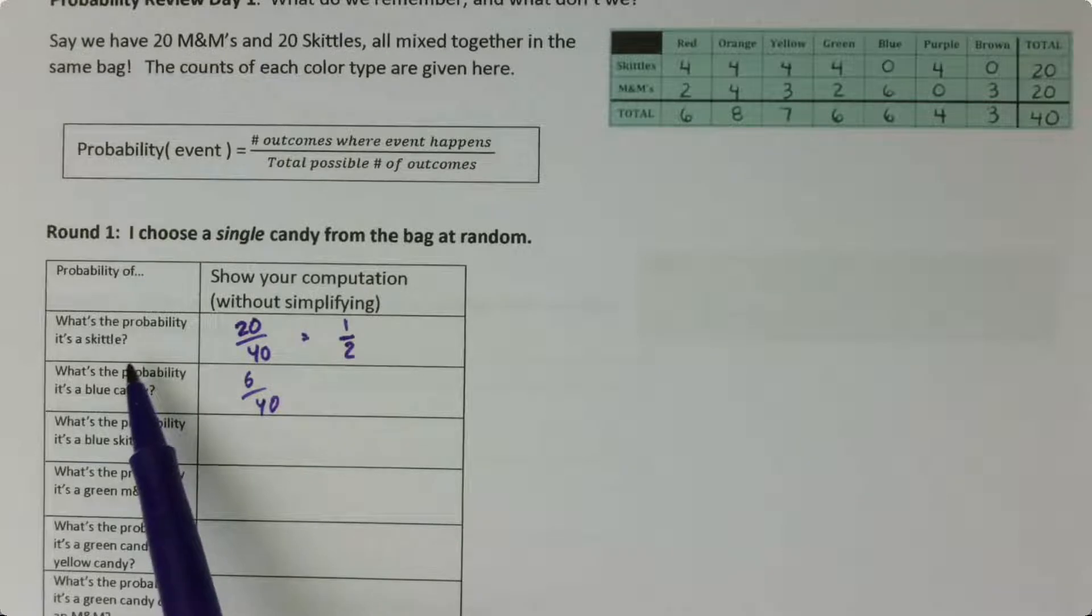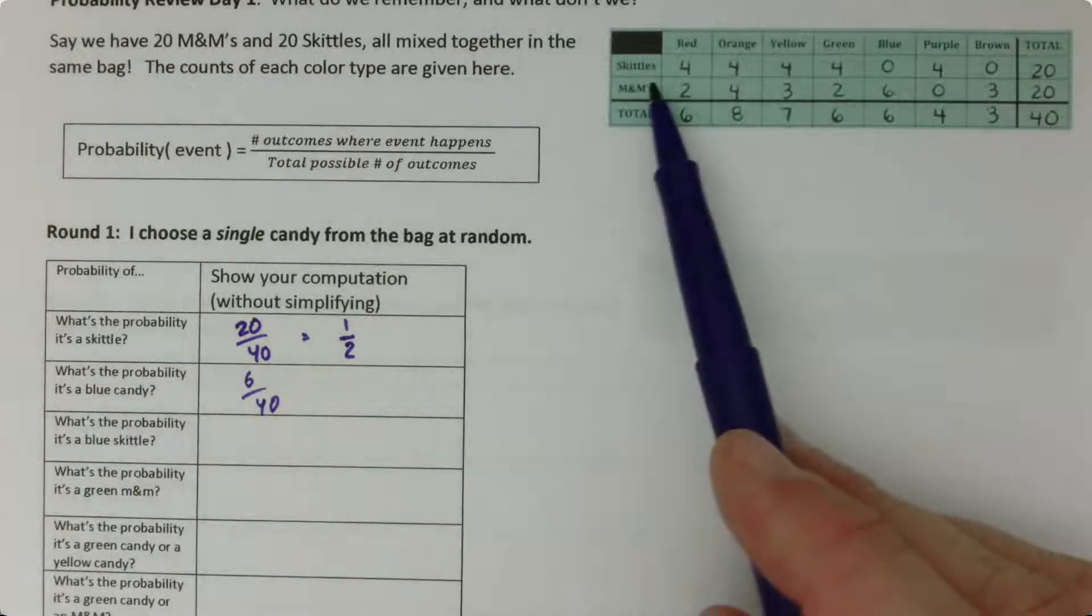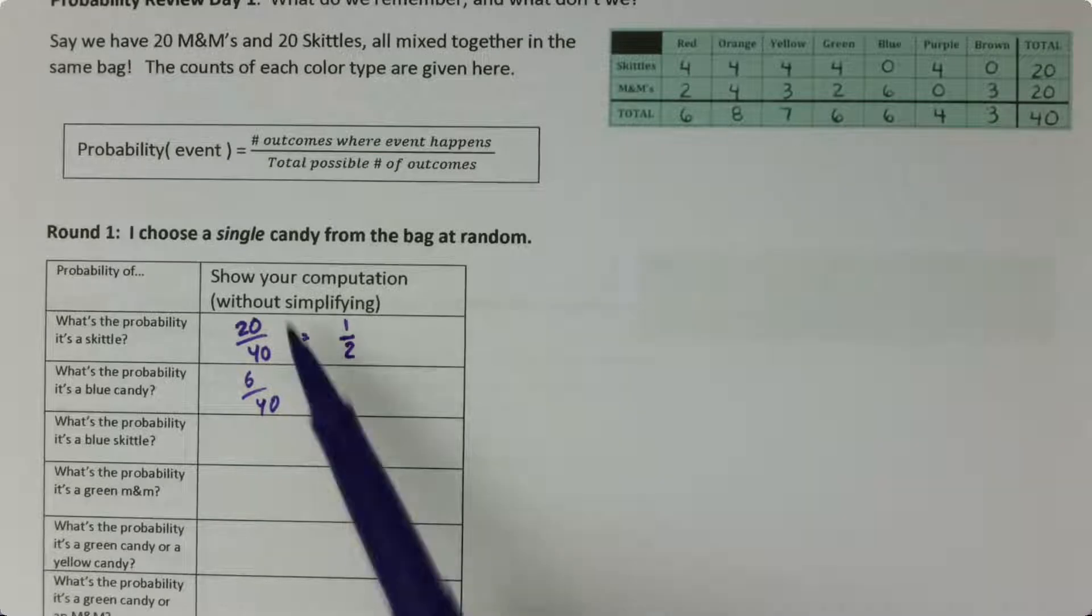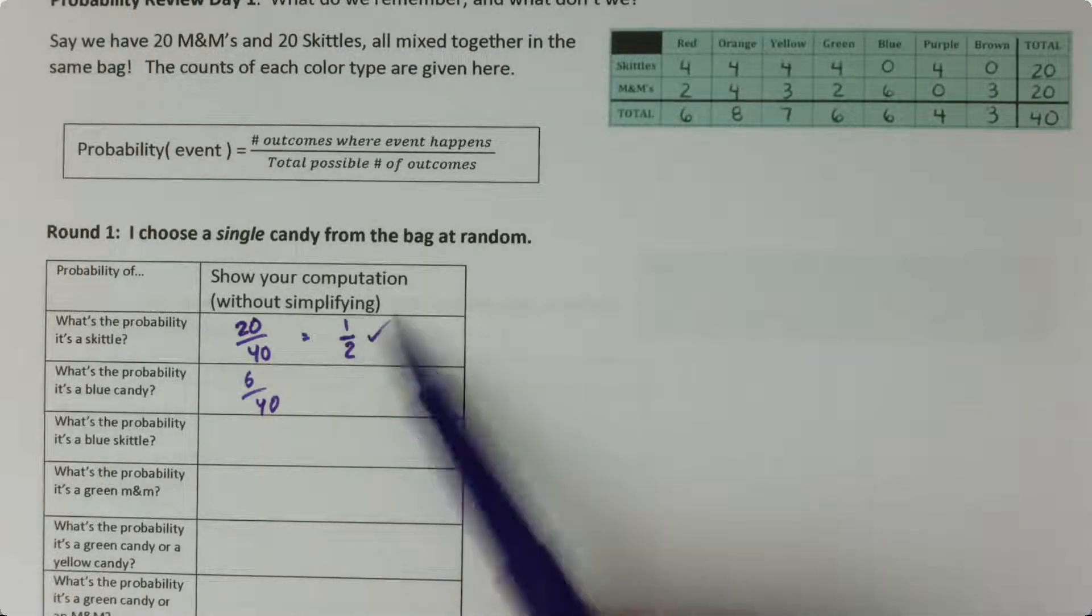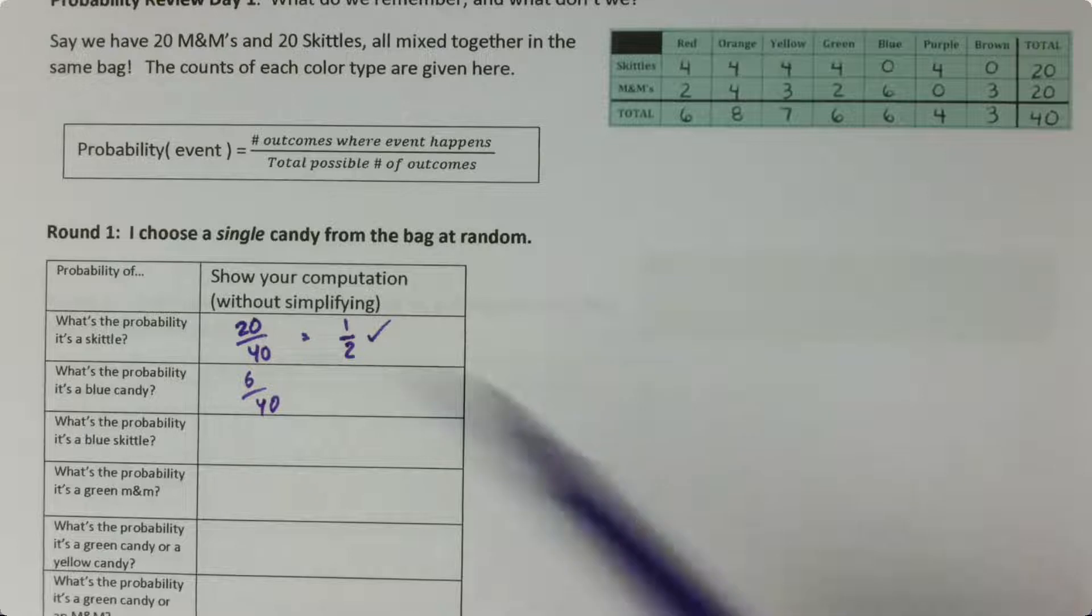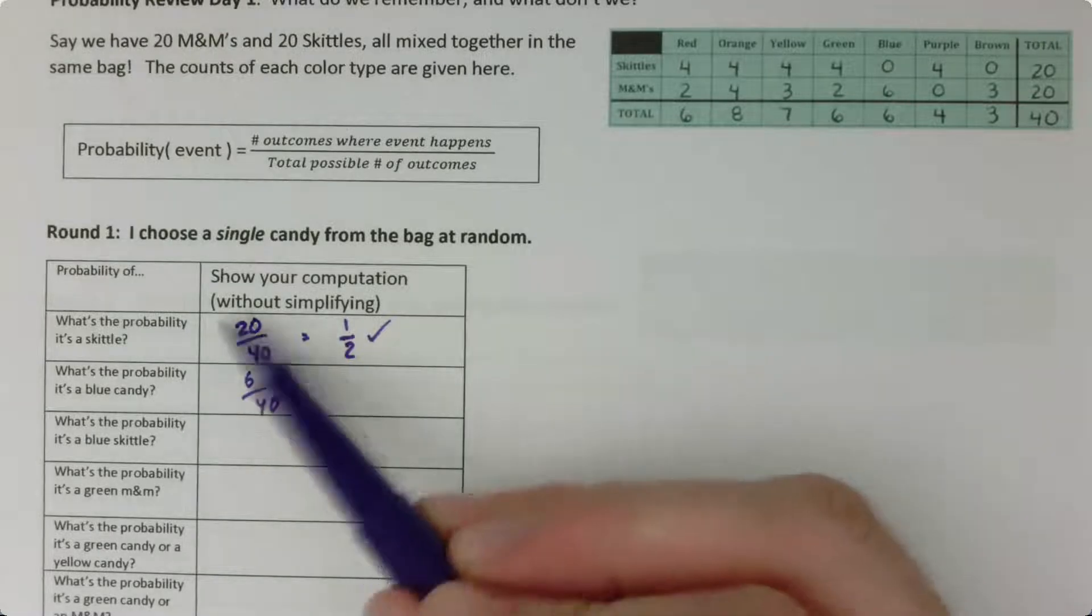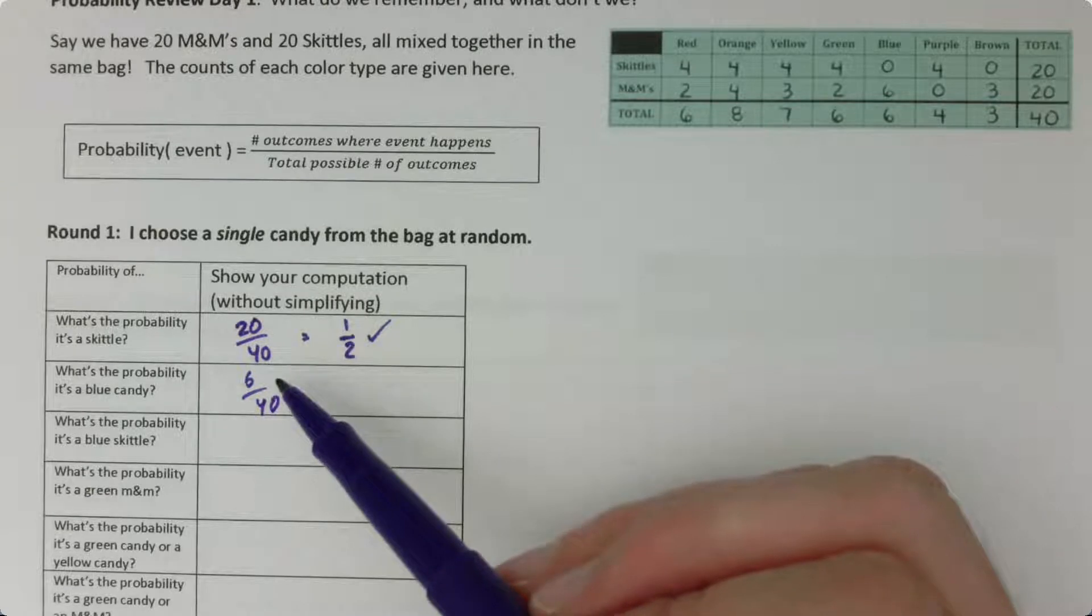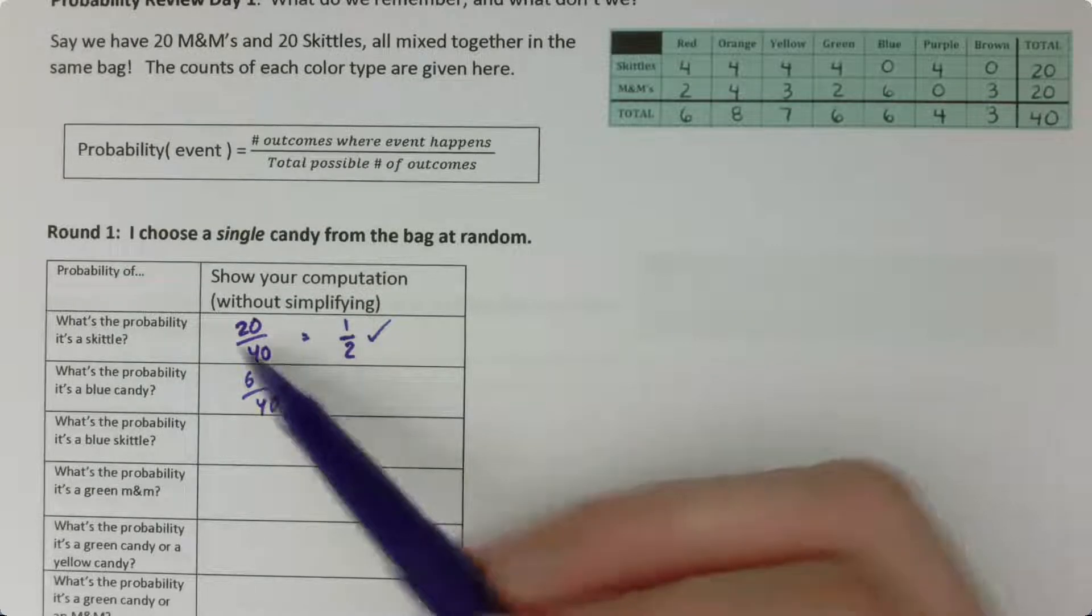So probability of drawing one Skittle, if I choose one candy, if I look over here there are 20 Skittles out of 40 candies total, so you'd write 20 over 40, which of course you could simplify into a probability of one-half. We're going to ask you to keep them unsimplified like this because it makes it easier to understand how you are thinking about the computation. So please don't simplify.